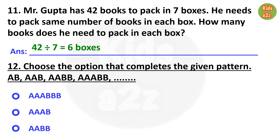Question 12: Choose the option that completes the given pattern. Look at the pattern carefully: first AB is given, then AAB, then AABB, then 3 times A and BB. That means after that 3 times A and 3 times B will come.